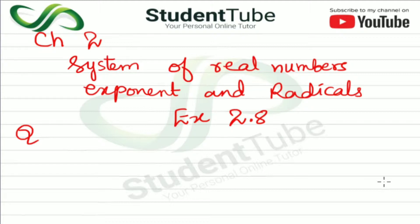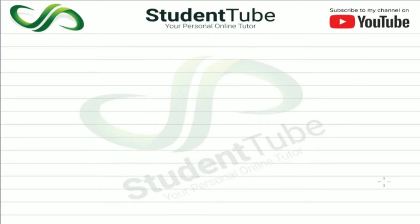Exercise 2.8 is Question No. 1. Rationalize the denominators of the following. Let's start Question No. 1. Question No. 1 is 1 upon 2 plus under root 3.